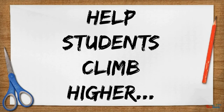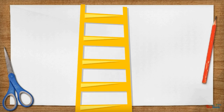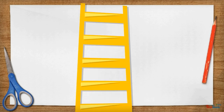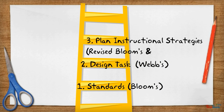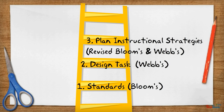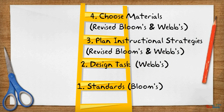Help our students climb higher by using this knowledge of critical thinking and task complexity. Examine standards for the levels of RBT verbs included. Design instructional tasks at the upper levels of DOK, and plan instruction that scaffolds learning to meet those higher levels. Keep RBT and DOK in mind when choosing classroom materials that are both on level and make our students stretch their capacity.